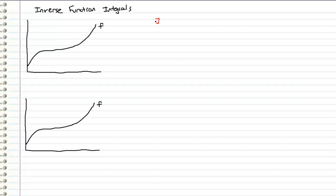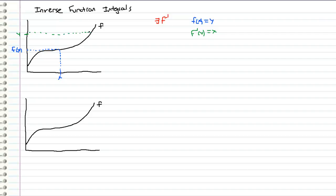So what I have here is an arbitrary function that we're going to call f, and we're going to suppose that there exists an inverse of this function. This little backwards E right here means 'there exists.' So this function f has an inverse, and basically what that means is that if we give it any x value, it's going to give a y value equal to f of x. Similarly, if we give the inverse a y value, it's going to spit out an x value, which is f inverse of y. That's just a little background on functions and inverses.